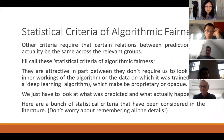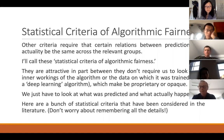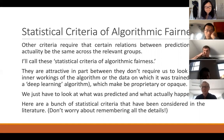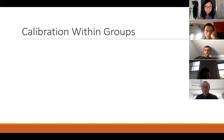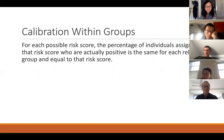Here are a bunch of statistical criteria that have been considered in the literature — eleven in all. Don't worry about remembering all the details; I'm going to try to take them all down except one using a simple example. First: calibration within groups. This says that for each possible risk score, the percentage of individuals assigned that risk score who are actually positive should be the same for each relevant group and equal to that risk score. So 70% of those assigned risk score 0.7 should in fact recidivate, for both Blacks and whites. This is motivated by the idea that risk scores should mean the same thing — have the same evidentiary value — for each group. A modified version of calibration within groups is going to be the sole criterion I defend.